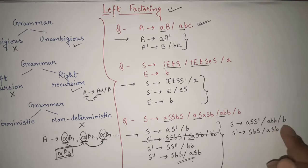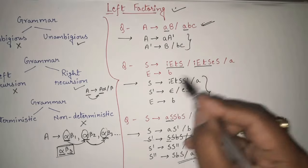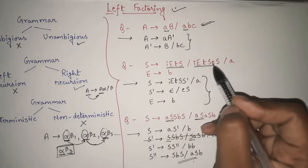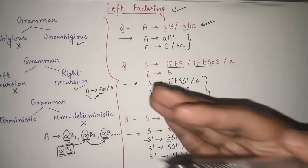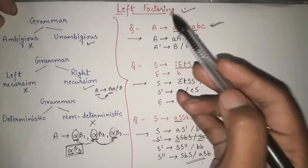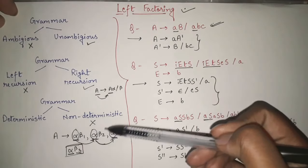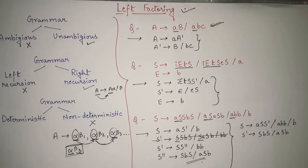There are multiple ways, but the main thing you should know is just this concept: whatever the common prefix is, take it as common and introduce a new variable; then write whatever is remaining as the production of that new variable. The most important thing to know about left factoring is what it is, why we apply it, and why we convert non-deterministic grammar into deterministic grammar. I hope you have understood the whole concept. That's all about left factoring. If my video was helpful, please share and subscribe the channel, leave a like and comment. Thank you so much.